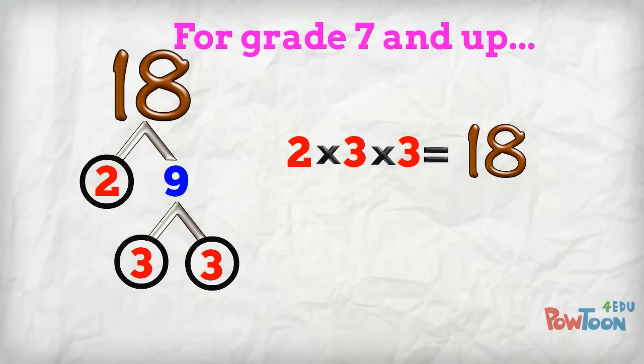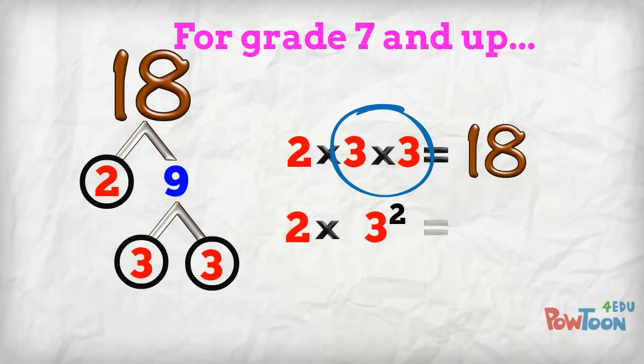How many 3's have I got? 2. So I say 2 times 3 to the power 2, because 3 is used twice, is 18.